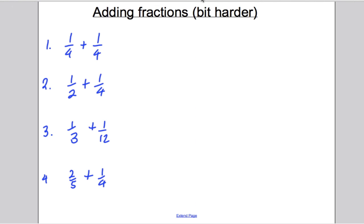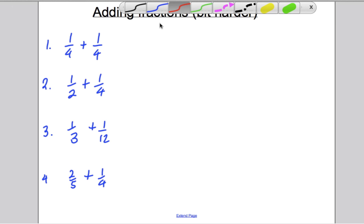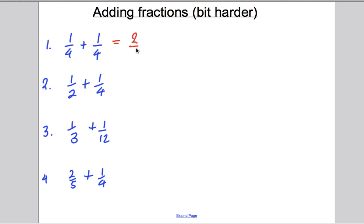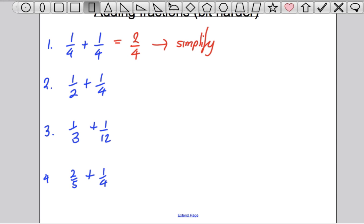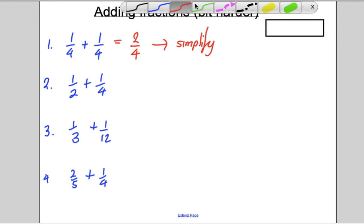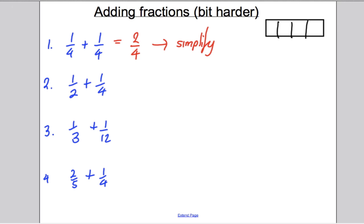The next set of questions were about adding fractions that were slightly more tricky. First: 1 quarter plus 1 quarter is 2 quarters. However, we should always simplify a fraction where we can. 2 quarters — if you draw a whole split into quarters and colour in two of them, you can clearly see that is the same as a half. So you simplify 2 quarters to 1 half.